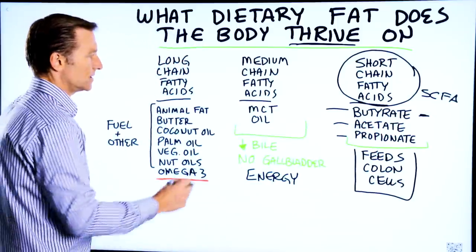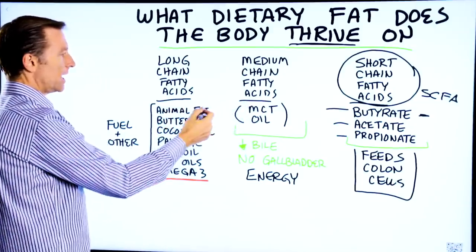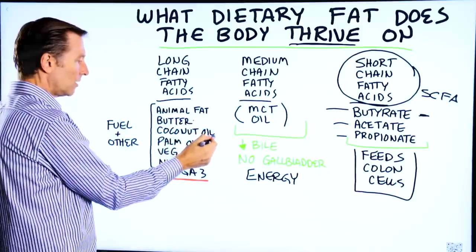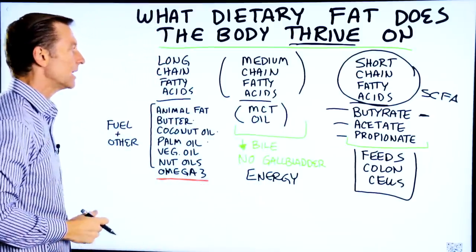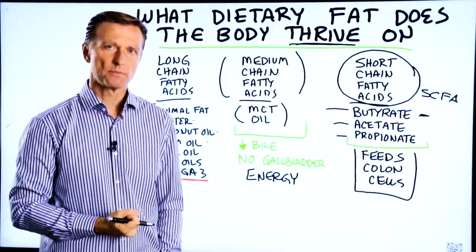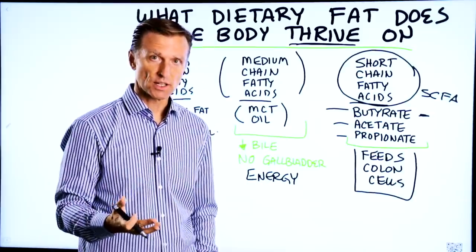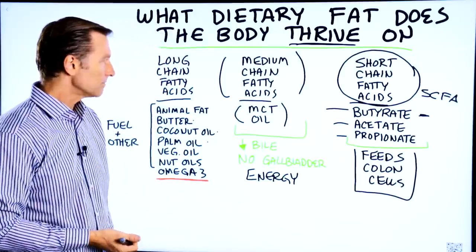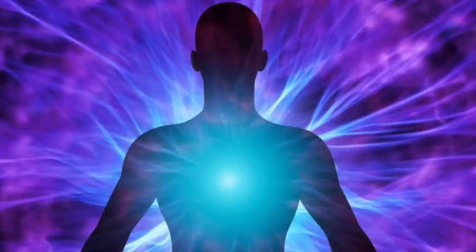Medium chain fatty acids are found in MCT oil. Some fats also provide MCTs — like butter, coconut oil, and palm oil. The unique thing about medium chain fatty acids is that they don't require bile to be absorbed. So if someone has no gallbladder, liver problems like cirrhosis, or any malabsorption issue, this would be a really good source of fat for fuel and energy.